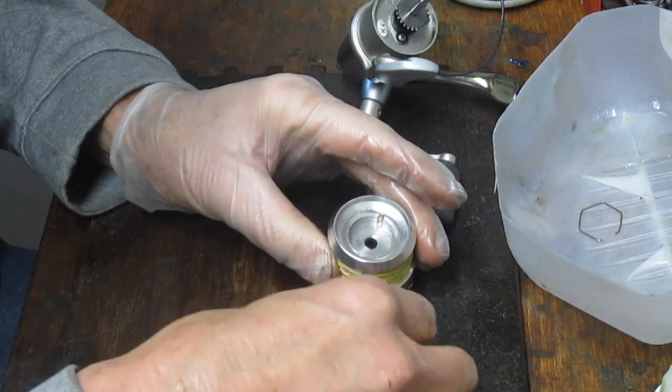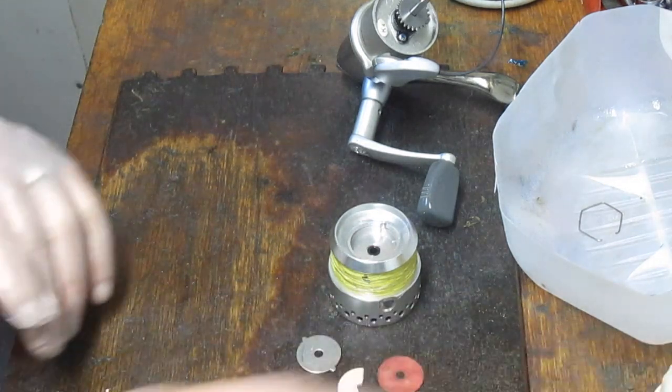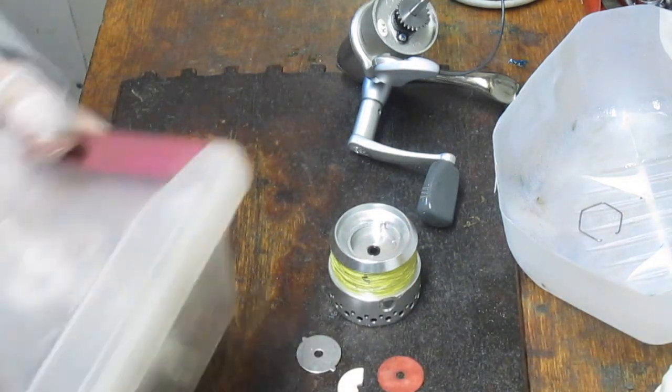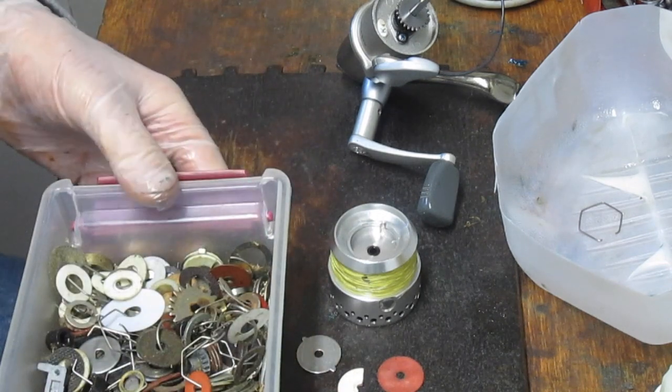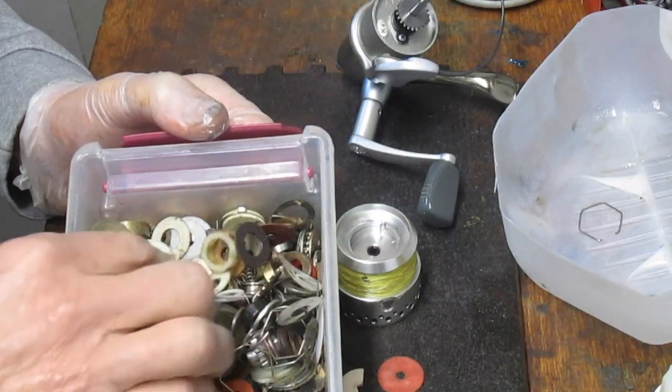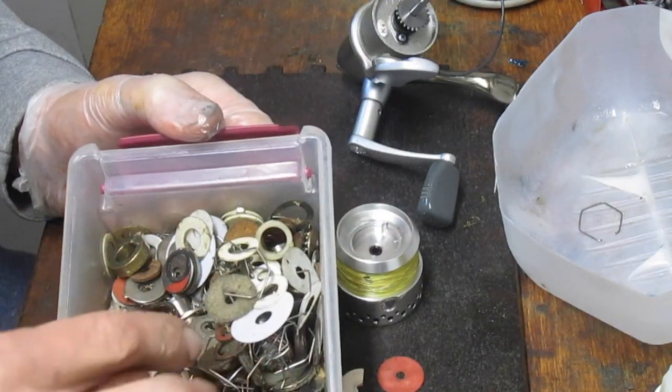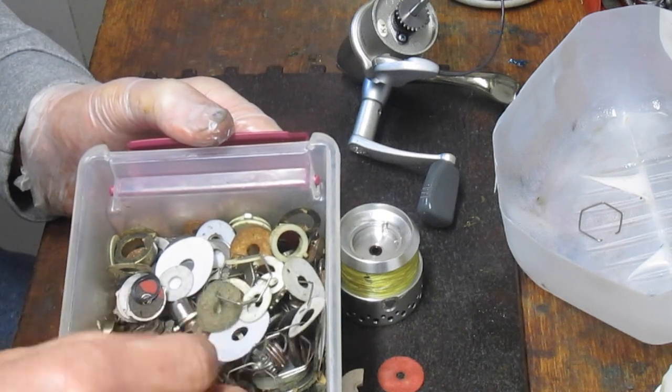So we've got to go find a replacement. And I have, I have a keepsake here. I have a catchall. I have whatever you want to call it. Whenever reels fail, there's generally a spool. It's got some bearings and things in there. It's got a bearing, there's a felt washer.